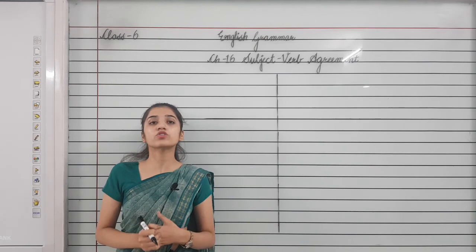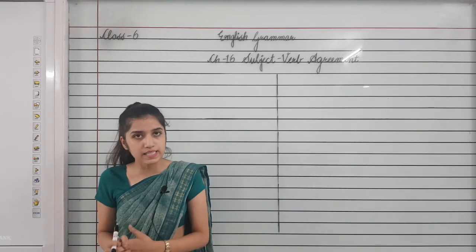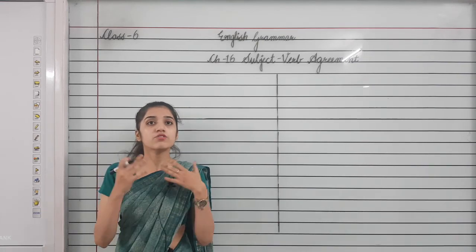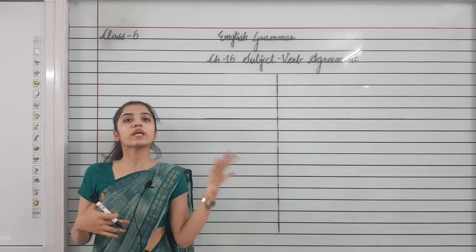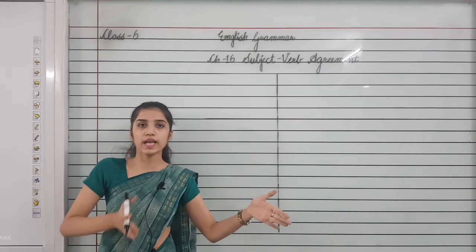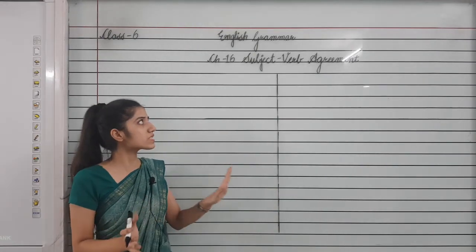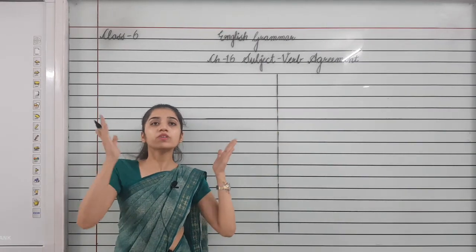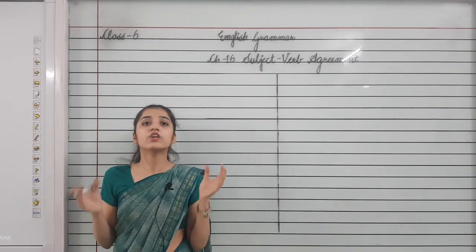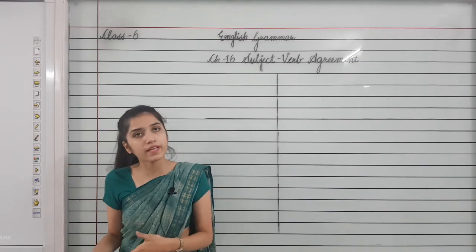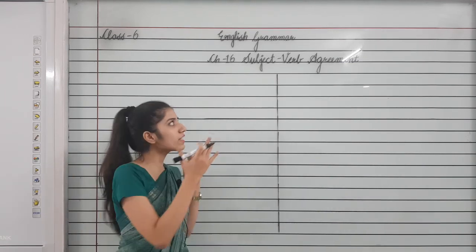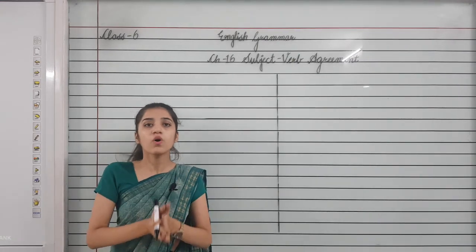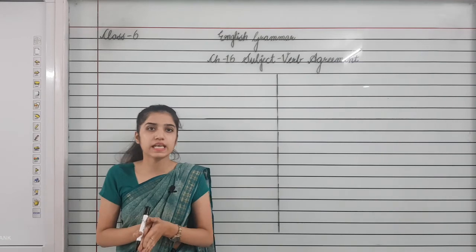You can open your books to page number 76 and you will find this chapter on that page number. So first, in the previous video, we have seen what was the subject and predicate. And now in this video, we will see subject-verb agreement — that means, how the subject and the verb agree with each other to make the sentence meaningful.